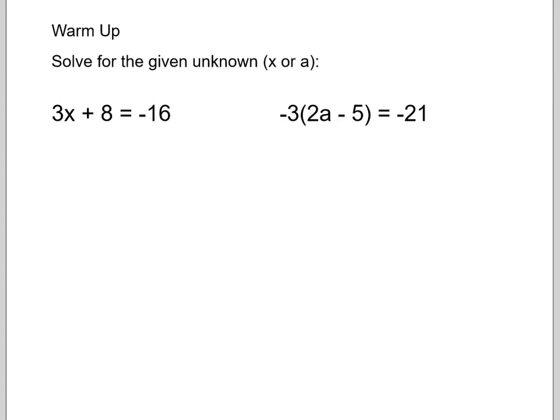So let's do a little bit of warm-up. So solve for the given unknown. So we have two questions, one with x and one with a. If you want to pause it and try it, you can do that. Okay, so I'm going to work through this one. So 3x plus 8 equals negative 16. So I want to make sure I'm using opposite operations. So the opposite of adding 8 is subtracting 8 from both sides. So then my next line would be 3x equals negative 24. And then to undo a multiplying of 3 on the x, I'm going to divide both sides by 3. And then I'm left with x equals negative 8.